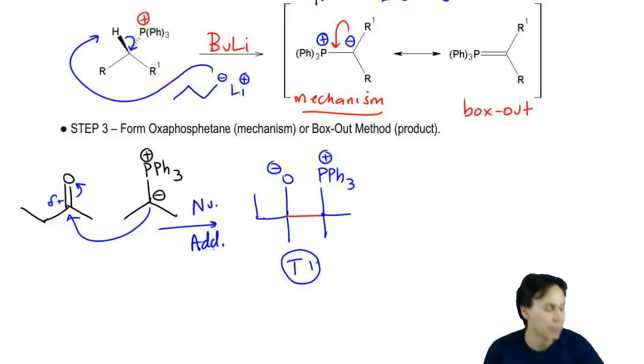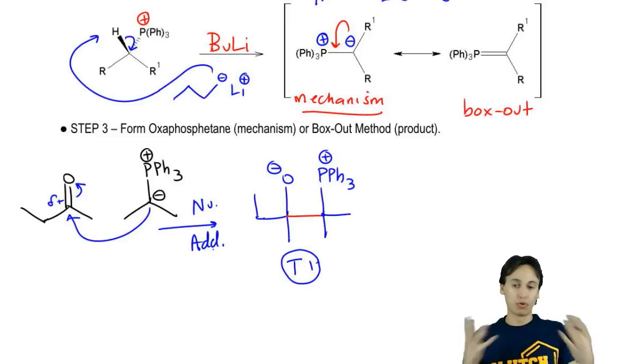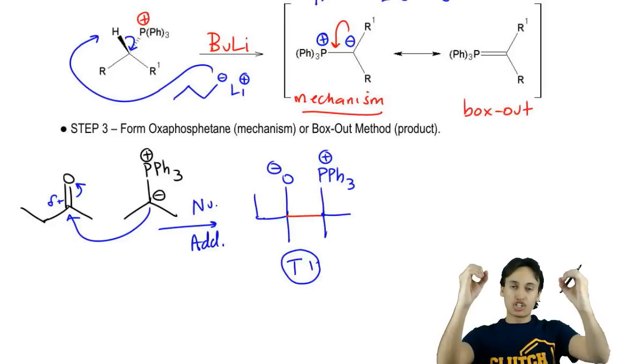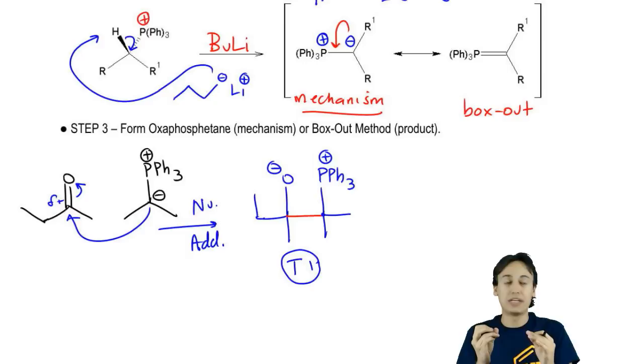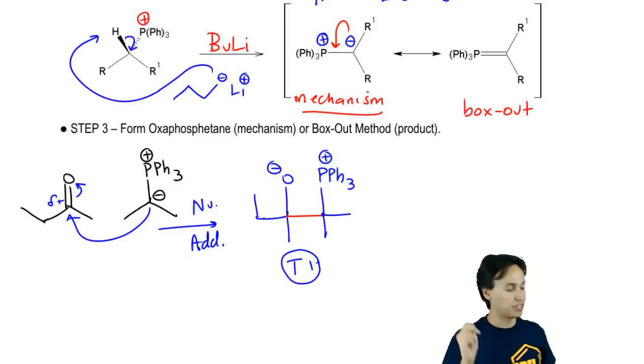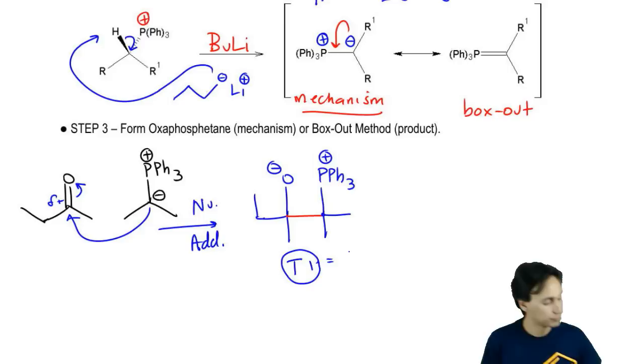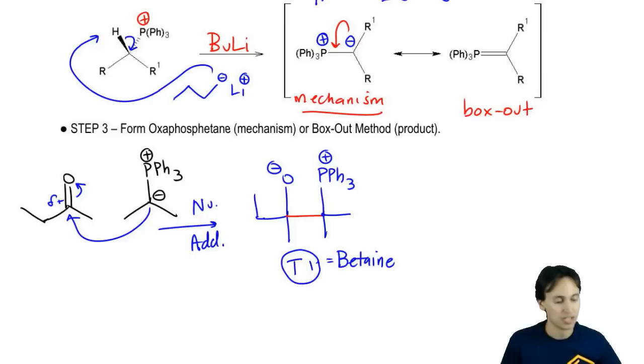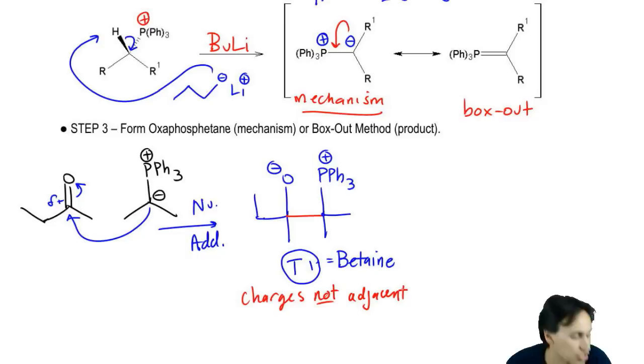Now typically with nucleophilic addition, what would happen is that I protonate and I'd be done with it. But this is the weird part. Because I've got the oxygen and the phosphorus with those charges so close to each other, a new type of reaction can happen that actually basically decomposes the entire structure. By the way, this tetrahedral intermediate that I showed actually does have a special specific name. You know what the name is? This might come up. This is called a betaine. What is a betaine, guys? I've showed you so many weird words. Ilid means that you have charges adjacent. Betaine means that you have charges that are not adjacent. This would be a betaine because my charges are not adjacent to each other.